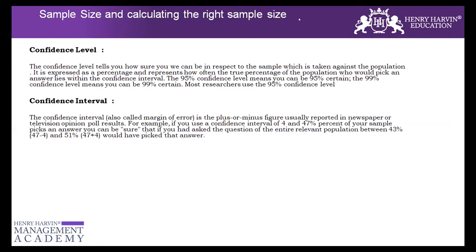When we are doing sampling and we have data of the population — we know the population mean — we take a sample from the population and check whether the sample mean falls within a range of the population mean. So if the population mean is 50 and we have a confidence interval of 10%, we accept a sample mean of plus or minus 10% of the population mean.